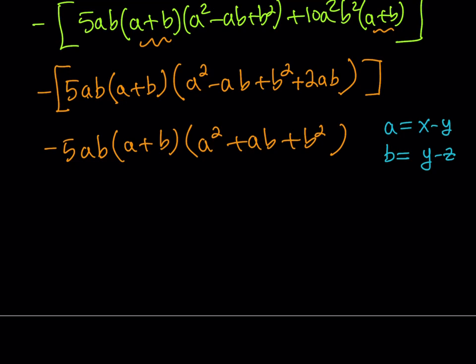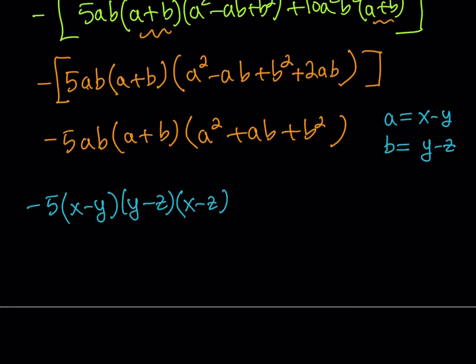Negative 5 a b would be x minus y times y minus z, and then I have a plus b. Remember that a plus b is not our original expression, it was the opposite, but that's okay. a plus b is just going to be x minus z. With the minus sign, you can turn it into z minus x.